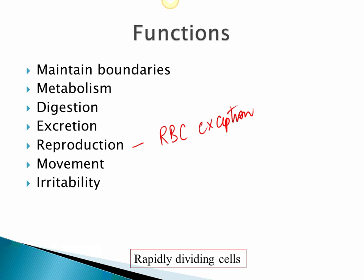Cells are capable of movement. They don't necessarily move from one place to another, but many cells show movement by having cilia or microvilli. When stimulated, cells are capable of showing a reaction — there is an interaction with the environment which we call irritability. These are some features and functions of a cell.